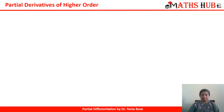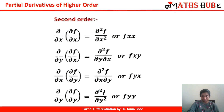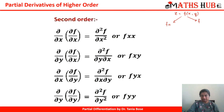So what do you understand by partial derivatives of higher order? For higher order, we will go in a sequential order, starting from first order to second order. In the previous video, we focused on a function depending on two variables x and y. The first order derivatives are fx and fy — in fx we take the derivative with respect to x keeping y constant, and in fy we take the derivative with respect to y keeping x constant.